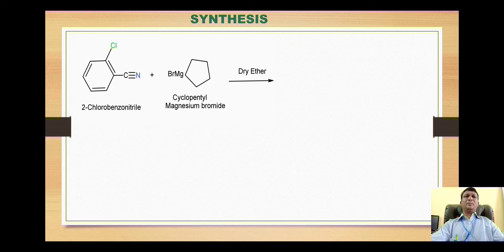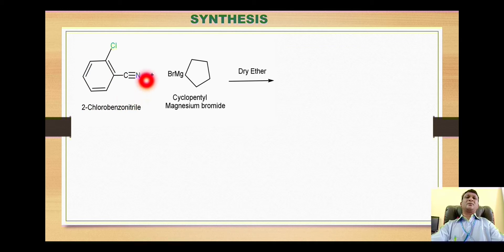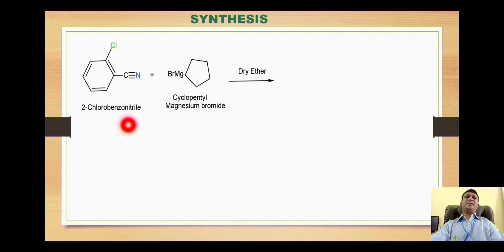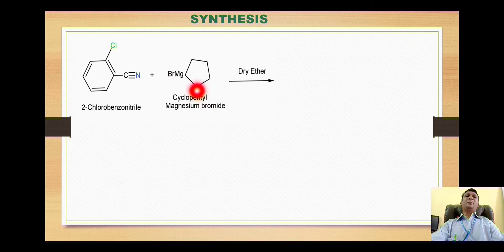The synthesis starts with the starting material 2-chlorobenzonitrile, which has the basic benzonitrile nucleus with a chlorine substituent at position two. This is reacted with the Grignard reagent cyclopentyl magnesium bromide, and the reaction takes place in the presence of dry ether.